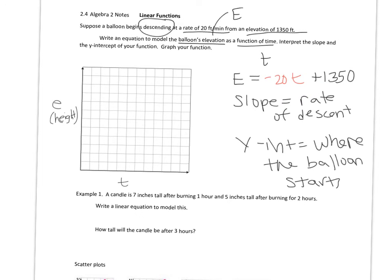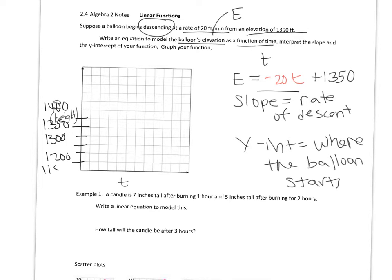If we have an initial amount of 1350, I'll set up the vertical axis starting around 1150, with markings at 1200, 1250, 1300, 1350, and 1400. For time, I'll mark minutes going across: 1 minute, 2 minutes, 3 minutes, 4 minutes, and so on. The starting point is 1350.